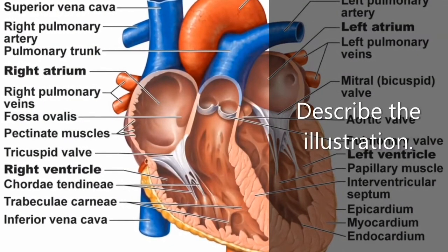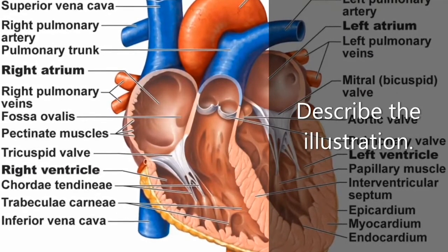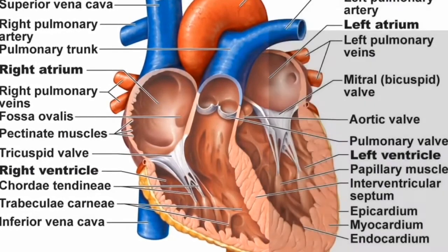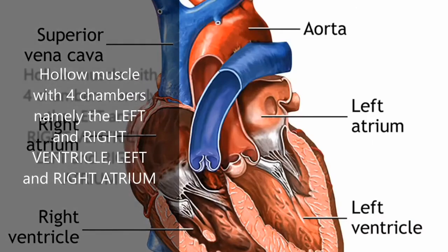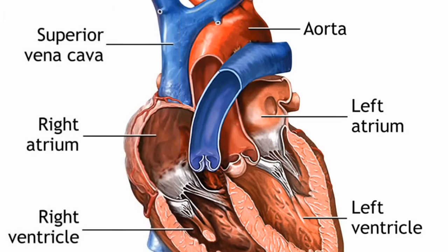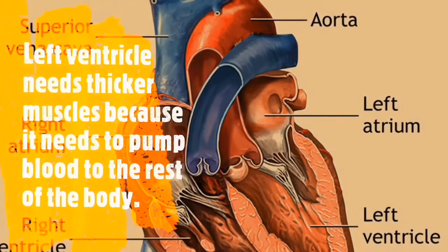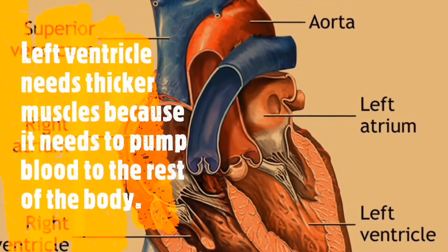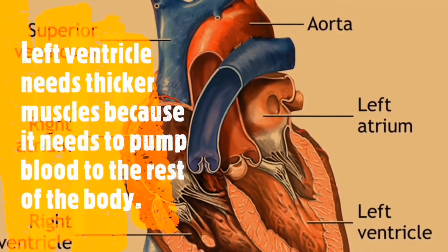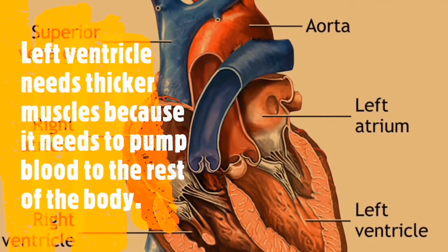The heart is a hollow muscle with four chambers, namely the left and right ventricle, and the left and right atrium. The left ventricle needs thicker muscles because it needs to pump blood to the rest of the body.